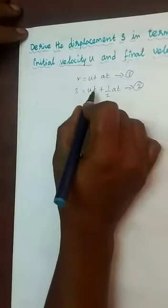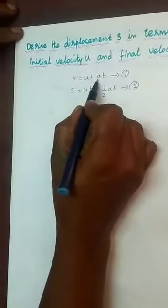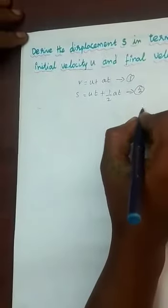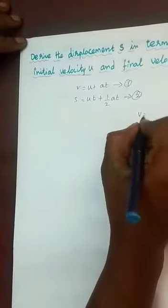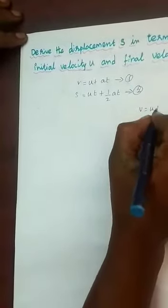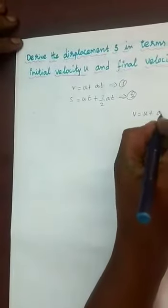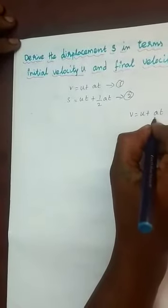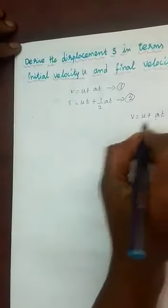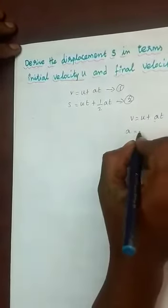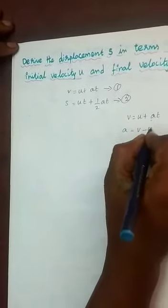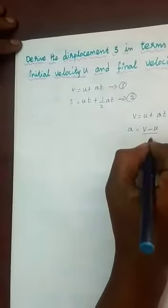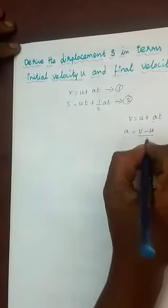Now, from that first equation, we need the A value — that is the acceleration. So, the first equation is V is equal to U plus A T. From that, we take A alone. So, A is equal to V minus U divided by T.